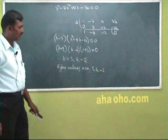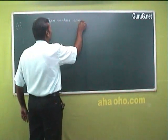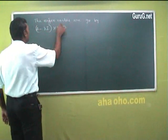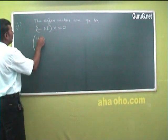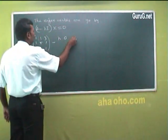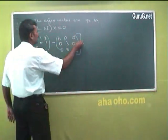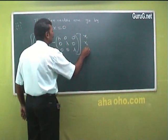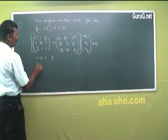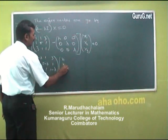The eigenvectors are given by (A minus lambda I) times x equals 0. The matrix A is 1 1 3 / 1 5 1 / 3 1 1. Case 1: when lambda equals 3. Substituting lambda equals 3 into (A minus lambda I): the matrix becomes (minus 2) 1 3 / 1 2 1 / 3 1 (minus 2), times column vector x1, x2, x3, equal to 0.